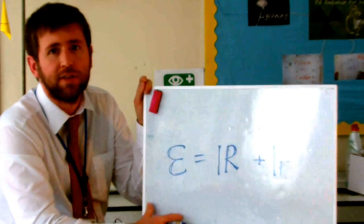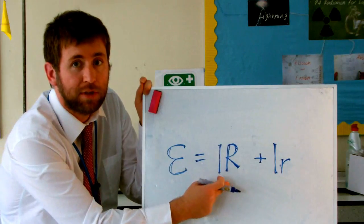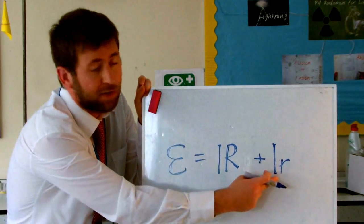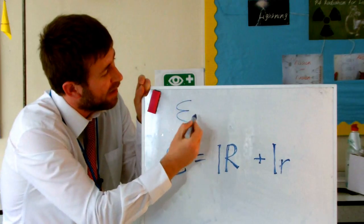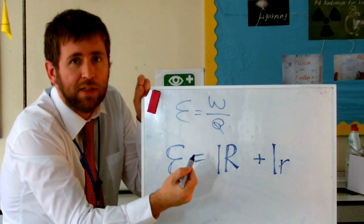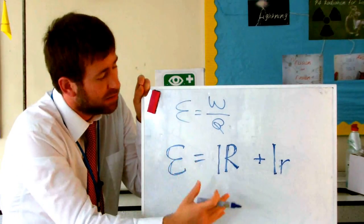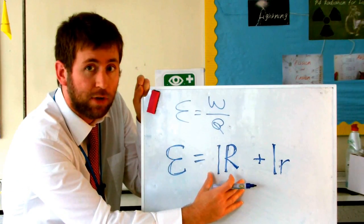This equation defines EMF. It says the EMF is equal to the current times the load resistance plus the current times the internal resistance. So basically, the EMF is the energy given to the charge. And as the charge flows through the circuit, some of the energy dissipates through the load resistance, and some through the internal resistance.